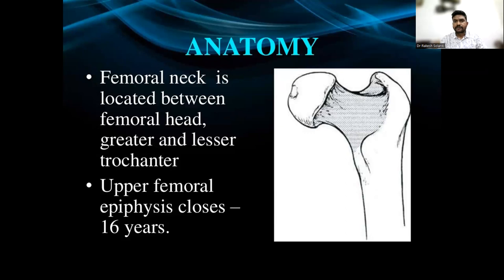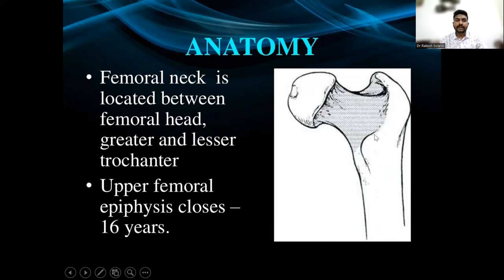Before discussing about fracture of femur neck, let us know about the normal anatomy of the femoral neck. The femoral neck is the area between the femoral head and the intertrochanteric region. This is the greater trochanter, this is the lesser trochanter, and this is the intertrochanteric line. The neck shaft angle is normal at around 125 to 135 degrees. It is slightly lower in females, giving rise to varus of the femoral neck.